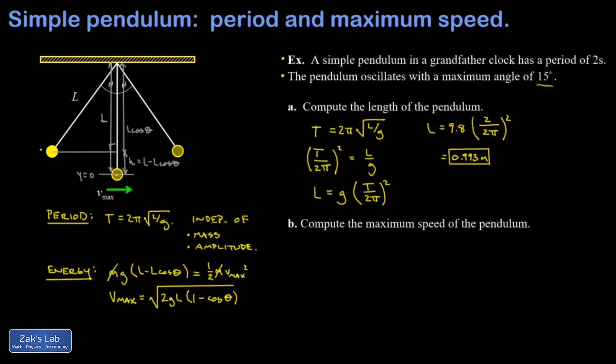In part B, I want the maximum speed. I've already solved this problem in general and got a little formula for that. So I get square root of 2 times 9.8 times my length, 0.993, times 1 minus cosine of theta, where theta is my angular amplitude.